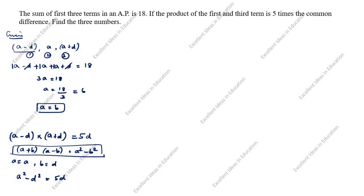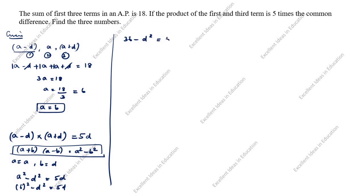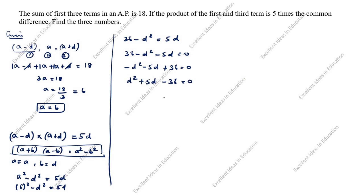Now, what is the value of A? A is 6. So 6 the whole square minus D square is equal to 5D. 6 squared is 36, so 36 minus D square is equal to 5D. Rearranging: 36 minus D square minus 5D is equal to 0. Multiplying through by minus 1: D square plus 5D minus 36 is equal to 0.